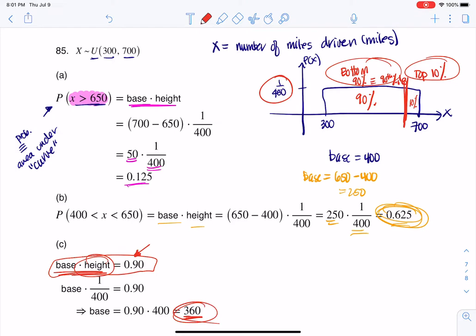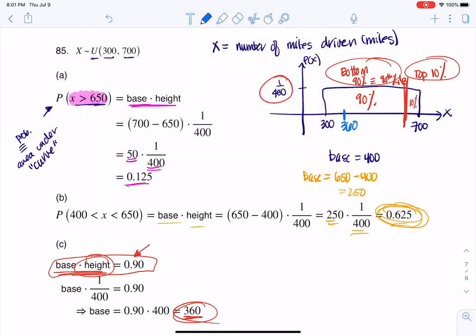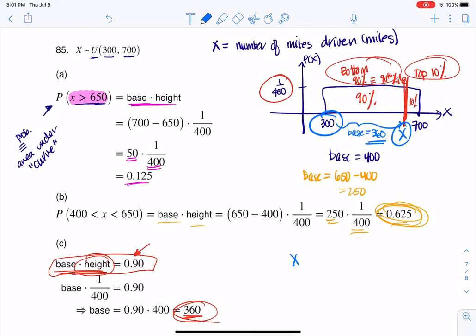And I want us to think about this number, because enough folks are going to stop here, and they're going to get it incorrect. And let me show you why. Think about where 360 is on the x-axis. It's somewhere over here. That can't be the answer. That's not the 90th percentile. And the reason behind that is because the base, this right here, this base needs to be 360. So whatever this number is, and actually let me just call it x for right now, x minus 300 has to equal 360. So x minus 300 has to equal 360, because I need the base to equal 360.